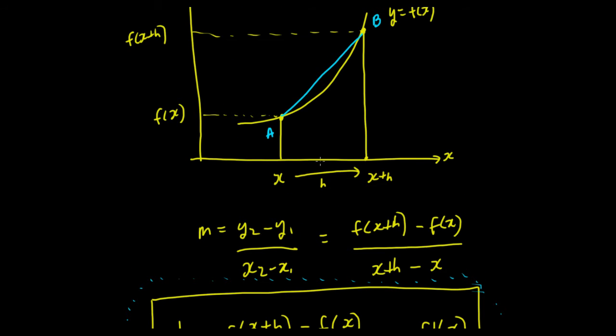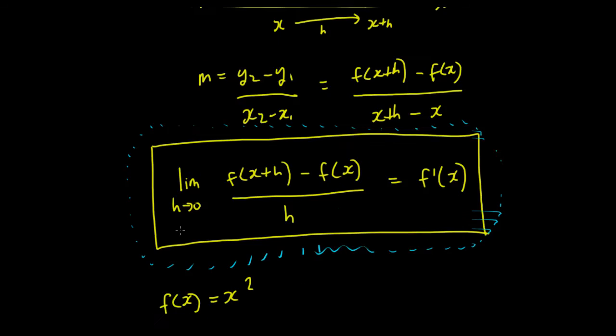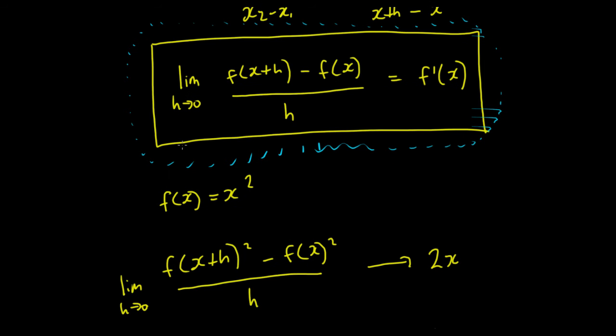And then what we do is we say, let this value h get smaller and smaller. So that's this little added section here. The limit as h tends to zero of this here gives you the derivative of the function, f derivative of x. OK, so that there is the little equation that we've been trying to derive, we've got it eventually after the past two videos.